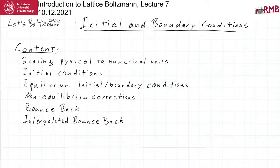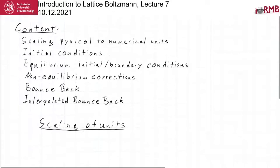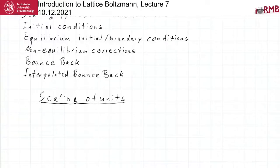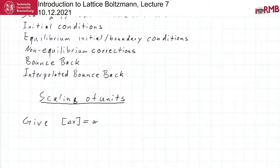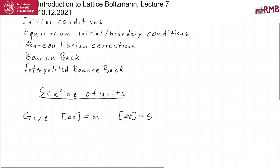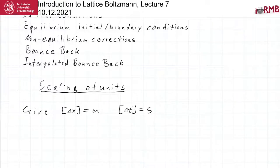We start with the scaling of units. This is important in Lattice-Boltzmann because we have a grid spacing delta x, given in meters, and a time step delta t, given in seconds. The physical quantities that we want to simulate are related to these physical units, and we have to put them into units that are suitable for Lattice-Boltzmann methods.